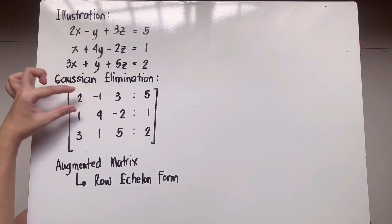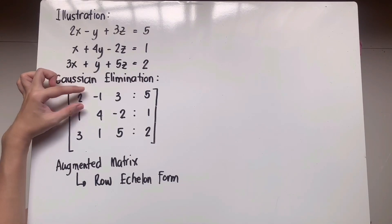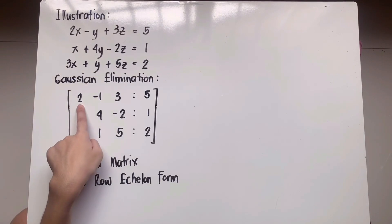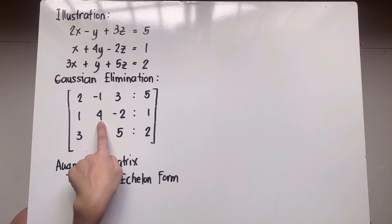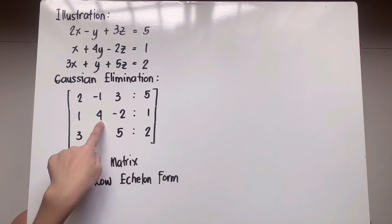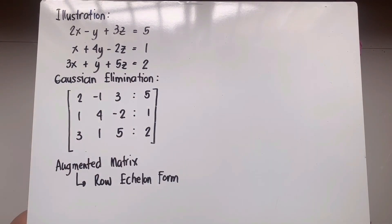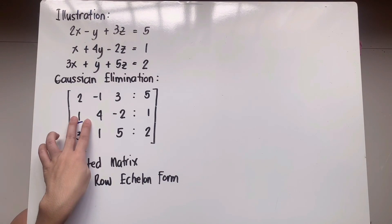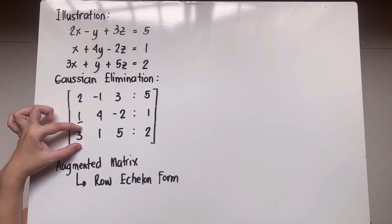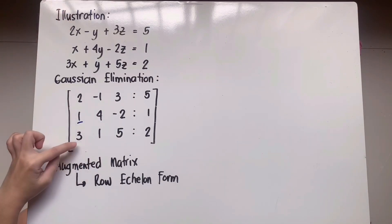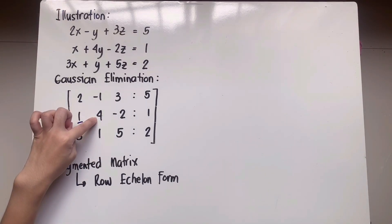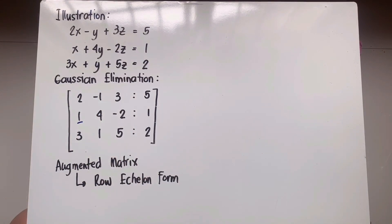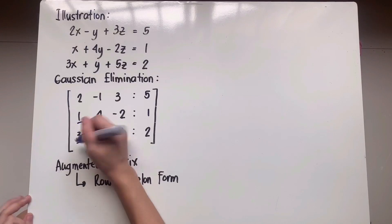For this to become a row echelon form, the succeeding leading coefficient or leading entry should always be to the right of the leading entry before it. So the leading entry of the next row should be to the right of the leading entry of the row above it. For example, the first row's leading entry is in the first column, so the next leading entry on the second row should be to the right of the first column. This means certain entries must be zero.